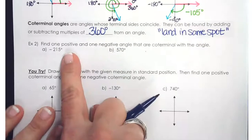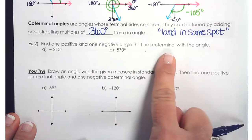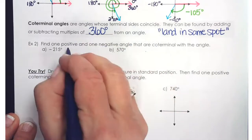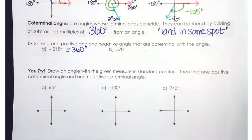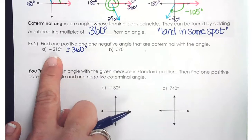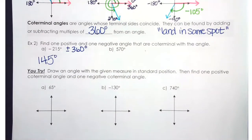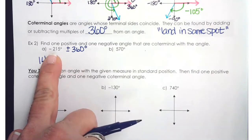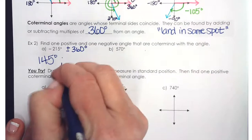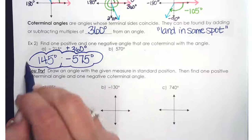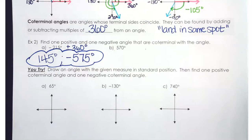To find one positive and one negative angle coterminal with negative 215 degrees: take negative 215 and add 360 — we get 145 degrees, which is coterminal with negative 215. Then take negative 215 and subtract 360 — we get negative 575 degrees. Those are two angles coterminal with negative 215 degrees.